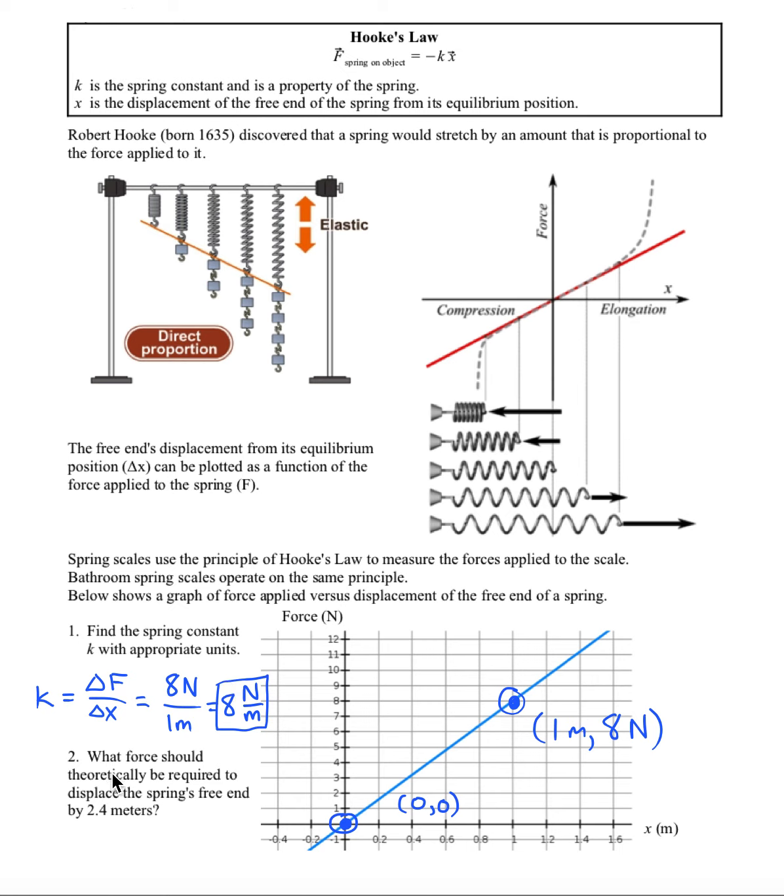So what force should theoretically be required to displace this spring's free end by 2.4 meters? For that, we can use Hooke's law. And I don't have to consider the vector nature of it. I'll just do the magnitudes for now.